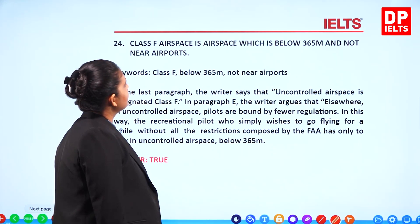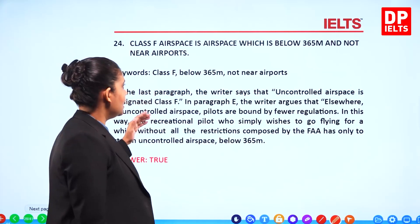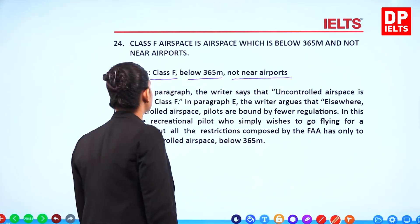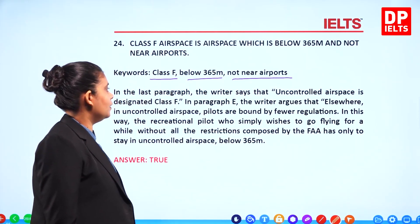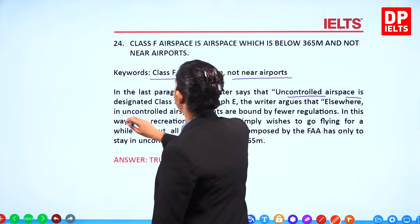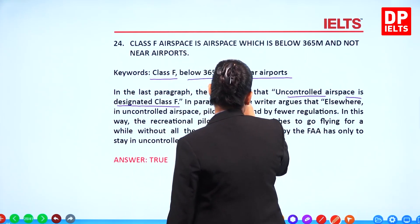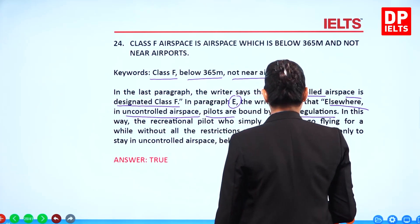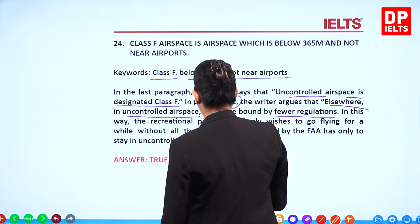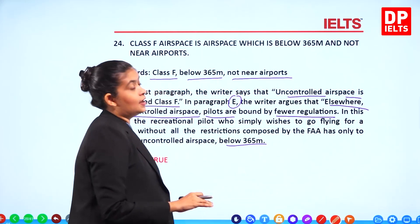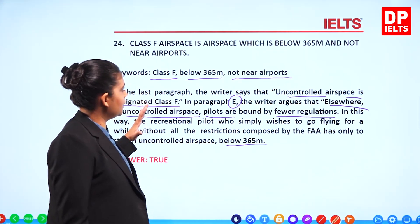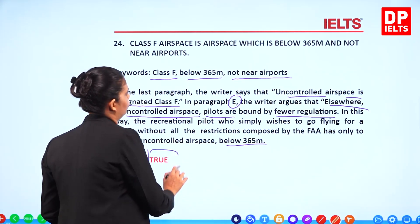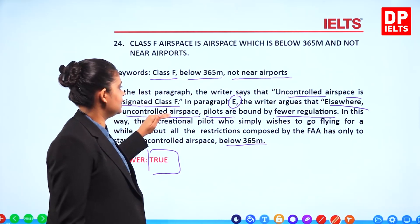Question 24: 'Class F airspace is airspace which is below 350 meters and not near airports.' Keywords: class F, below 365 meters, not near airports. In the last paragraph, the writer says uncontrolled airspace is designated Class F. In paragraph E, it says uncontrolled airspace exists elsewhere, and a recreational pilot can fly below 365 meters without FAA restrictions. Class F is below 365 meters and not near airports. The answer is True.